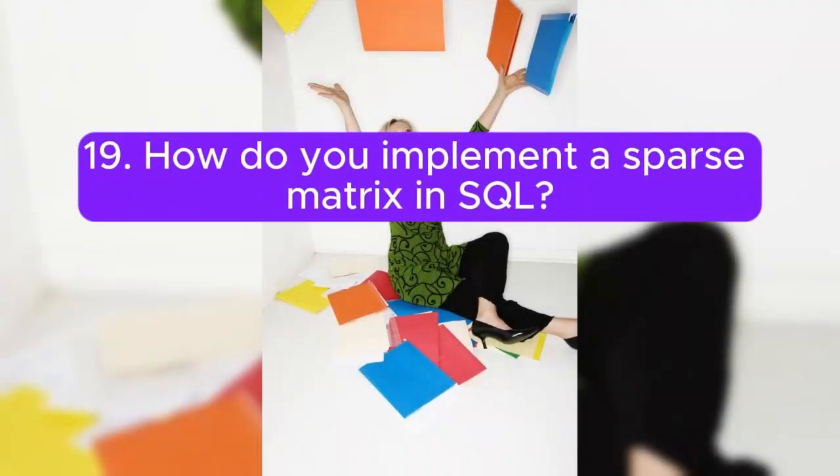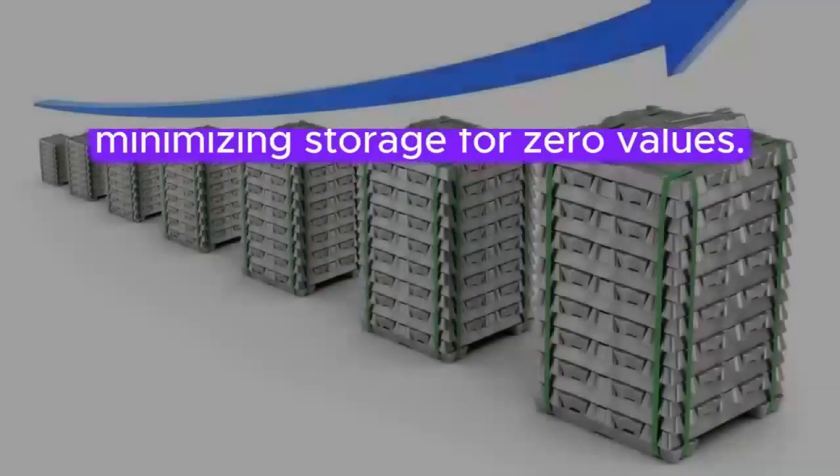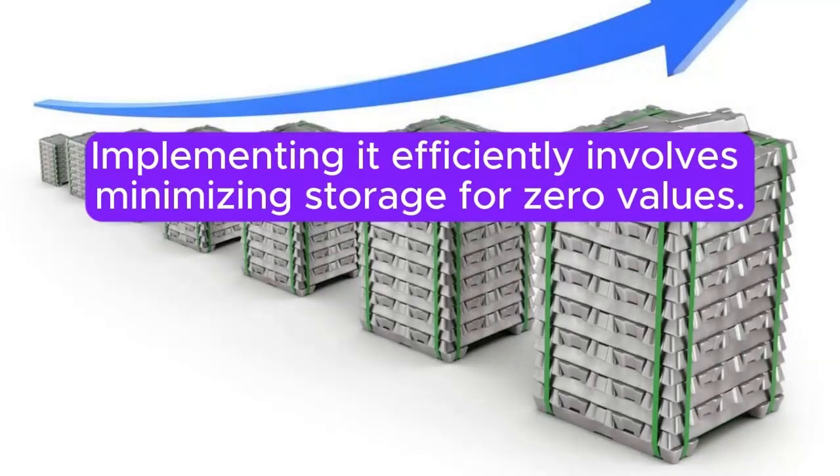Question 19: How do you implement a sparse matrix in SQL? Answer: Use a combination of rows and columns to represent the matrix. Implementing it efficiently involves minimizing storage for zero values.